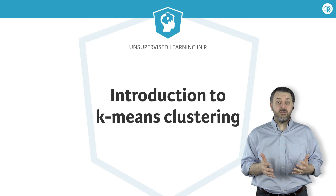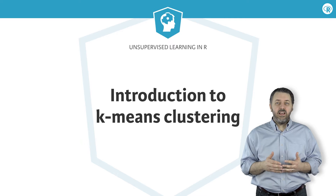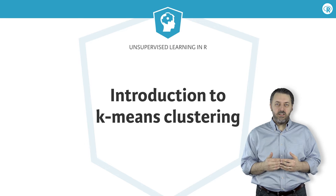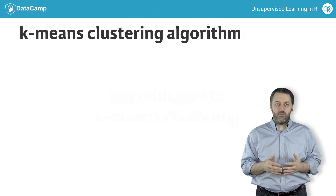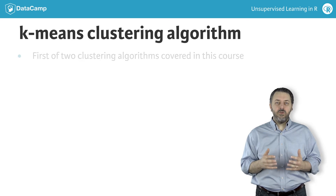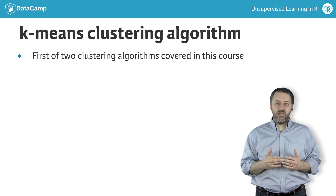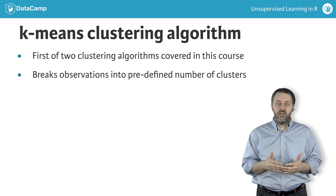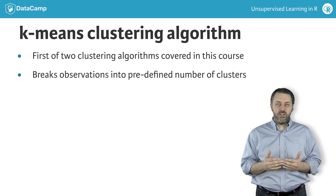Now that we have some conceptual understanding of unsupervised learning and the different goals of unsupervised learning, let's dig right in with one popular approach. K-means is a clustering algorithm — an algorithm used to find homogeneous subgroups within a population. K-means is the first of two clustering algorithms to be covered in this course. The K-means algorithm works by first assuming the number of subgroups or clusters in the data, and then assigns each observation to one of those subgroups.